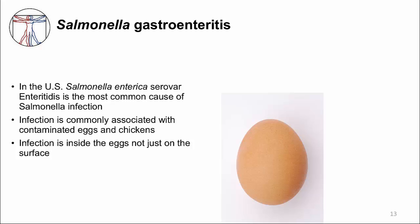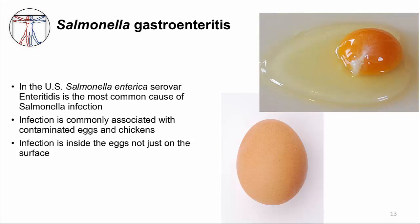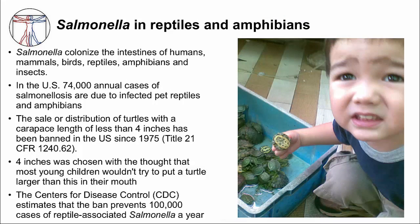Chickens can get systemic illness from Salmonella infection, and bacteria can travel through the ovaries into the developing egg. The most common source of Salmonella gastroenteritis in the U.S. is eggs from infected chickens — Salmonella can contaminate the inside of the egg due to bacteremia, not just the shell, which is why the CDC recommends eggs be cooked and not eaten raw. Another common source is reptiles and amphibians. In the U.S., it is illegal to sell turtles less than four inches, preventing an estimated 100,000 cases of reptile-associated Salmonella infection per year.